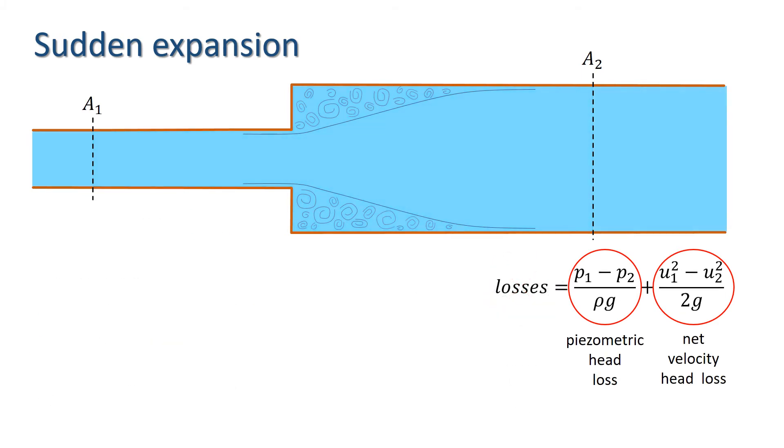Finally, in order to find the piezometric head loss, we apply the law of conservation of momentum, which as before states that the momentum entering the control volume plus the sum of the forces acting on the fluid in the control volume equals the momentum leaving the control volume. Again, I have taken x to be the horizontal direction and consider only the momentum equation in the x direction.